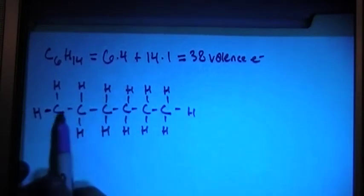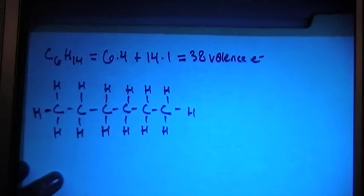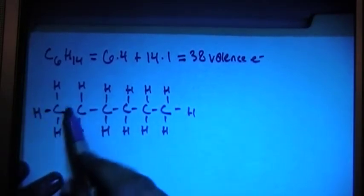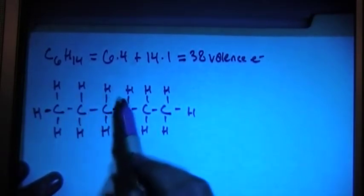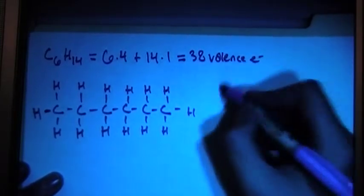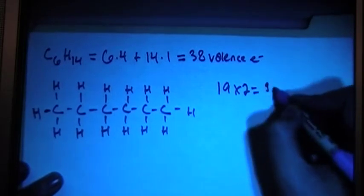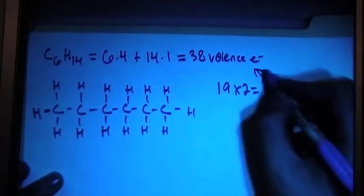Let's go ahead and count out the electrons now, because there's 6 carbons and 14 hydrogens. So let's go ahead and count out the electrons. So, 1, 2, 3, 4, 5, 6, 7, 8, 9, 10, 11, 12, 13, 14, 15, 16, 17, 18... 19 bonds.